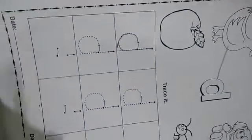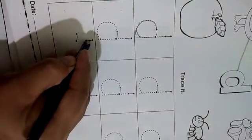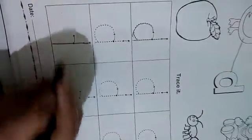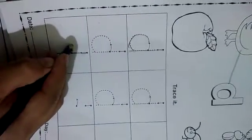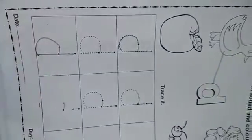And write D on two dots. Make a straight line and half circle. It will be right D.